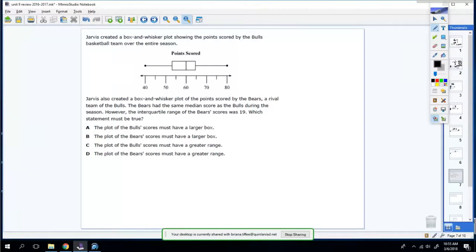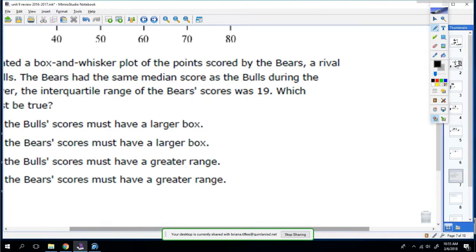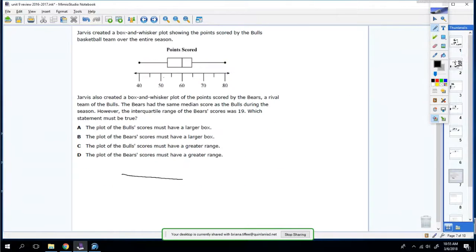He created a box and whisker plot showing the points scored by the Bulls basketball team over the entire season. He also created a box and whisker plot of the points scored by the Bears, a rival team of the Bulls. The Bears had the same median score. However, the interquartile range was 19. So this is the Bulls. And down here is the Bears, which doesn't show you the box and whisker plot, it just tells you about it. So the only thing that we know is that the Bulls and the Bears have the same median, and that the interquartile range for the Bears is 19.